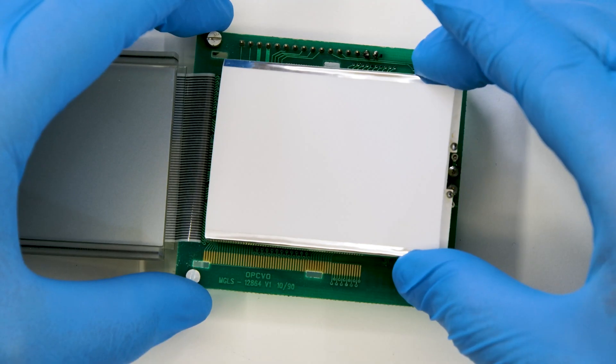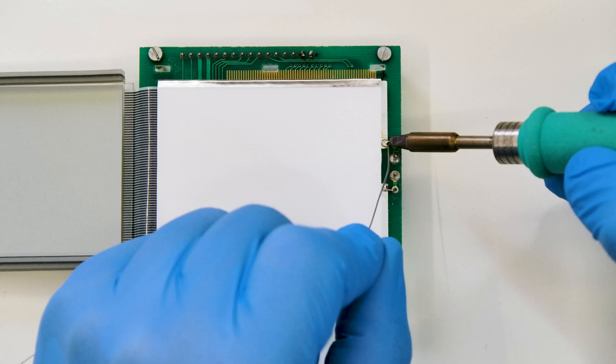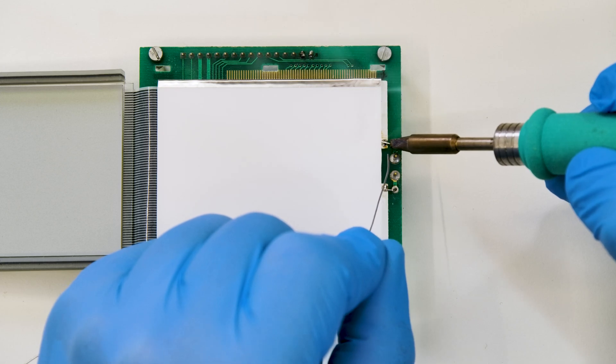Put back the display housing, securing it by soldering back the clips with the soldering iron with chisel tip at 350 degrees.